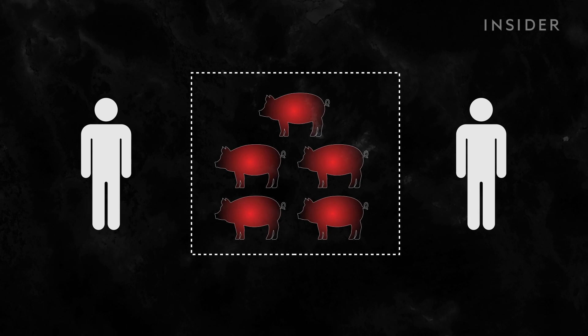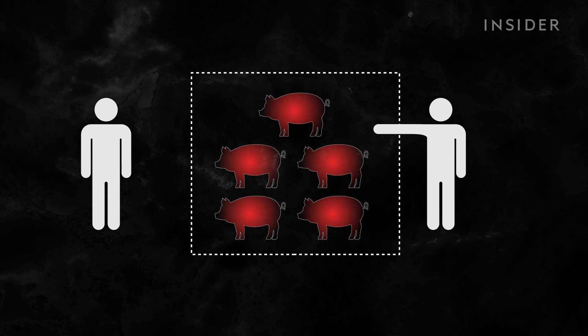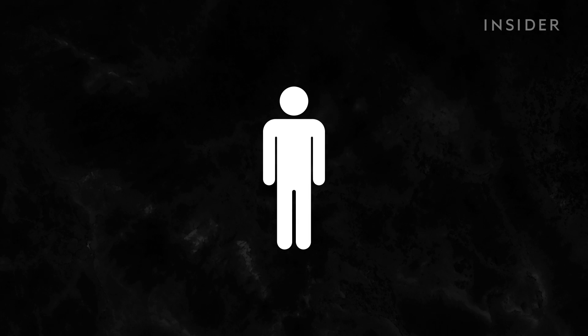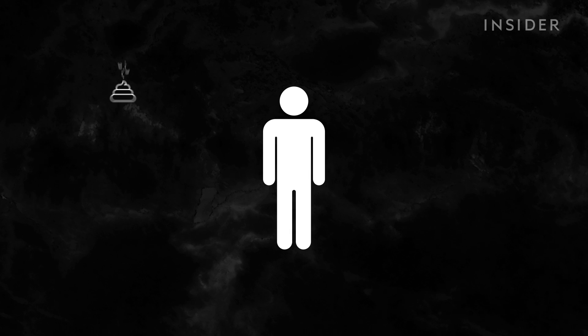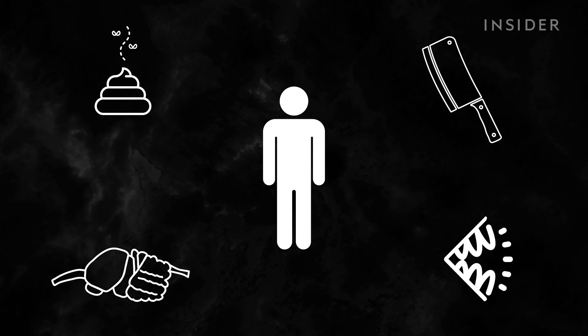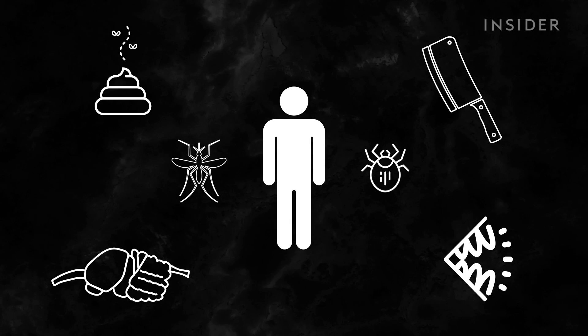But the likelihood also has to do with how the humans are interacting with them. Animal viruses are usually transmitted to people in a few ways. Contact with excretions, slaughter, bites, contact with tissues, or through an intermediate species, like mosquitoes or ticks.